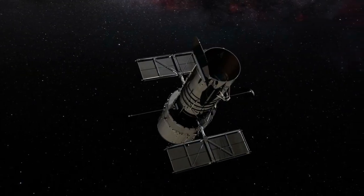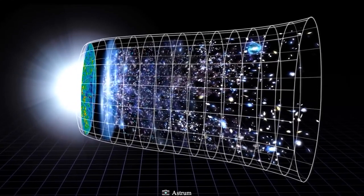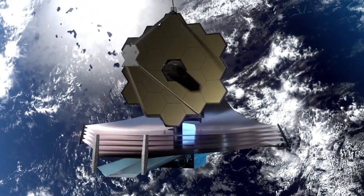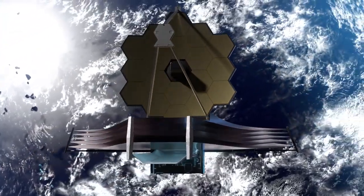Hubble can see ultraviolet light, visible light, and a small amount of infrared. Webb, on the other hand, can see the whole range of infrared light.